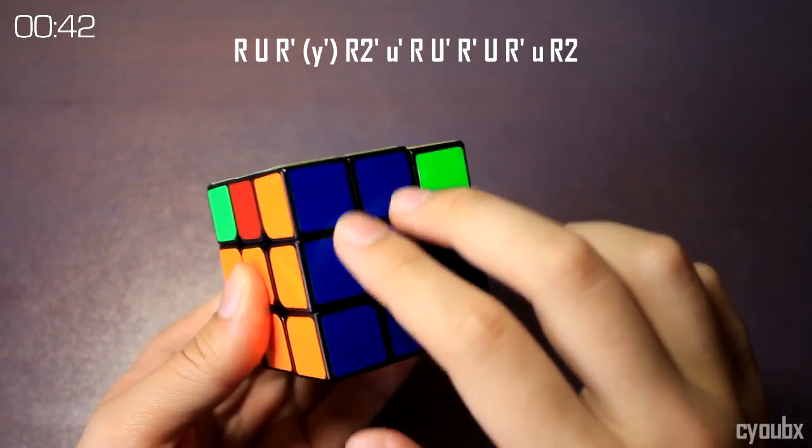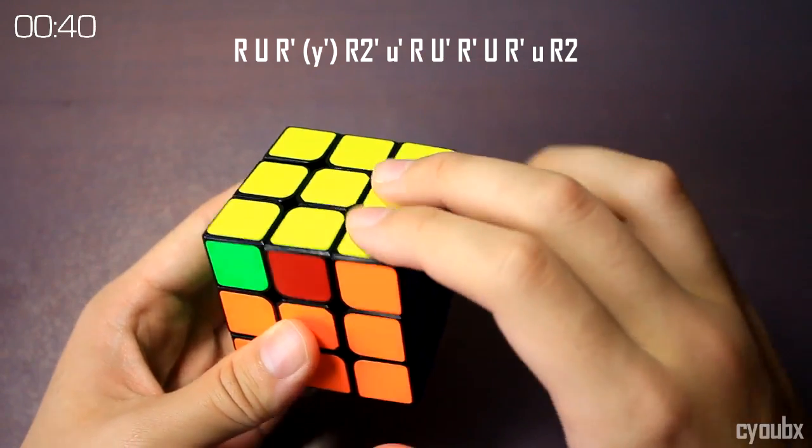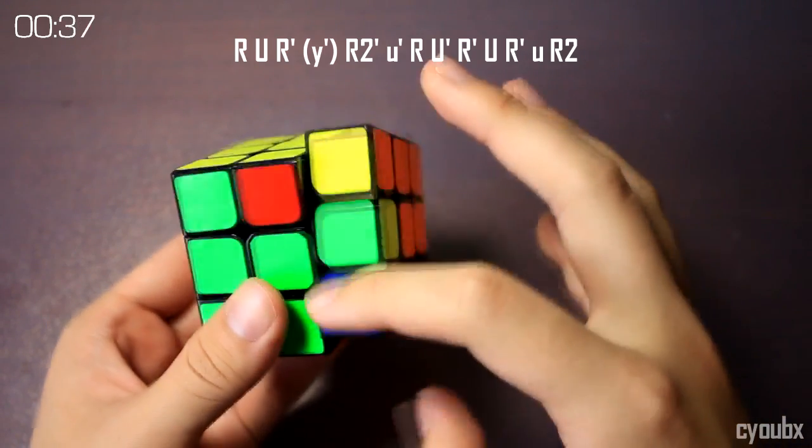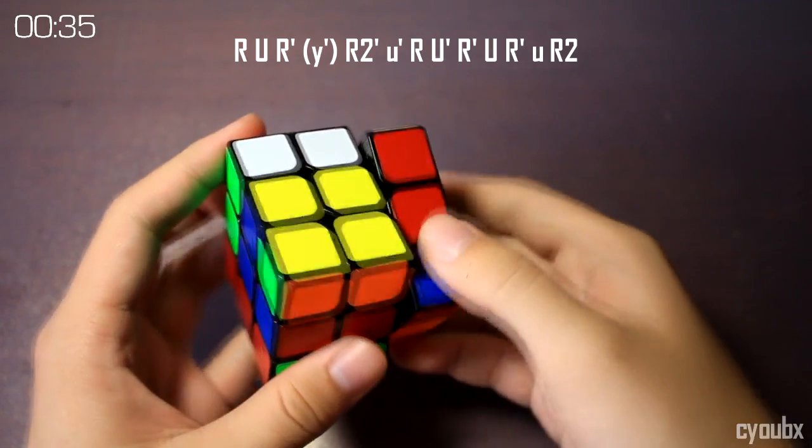There are a lot of weird finger tricks in this one, so I do recommend watching this video multiple times, but here are a couple things that I'll point out. The first is, you'll notice I did the R2 prime with one pointer finger.